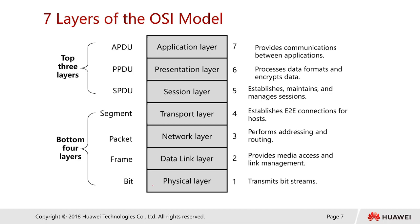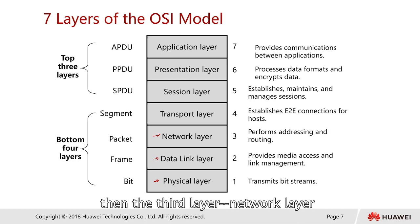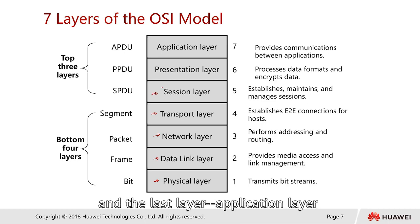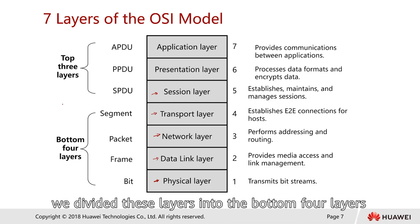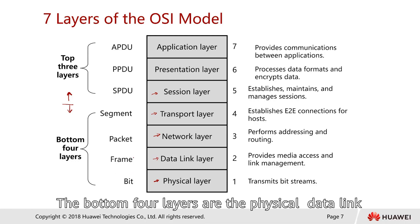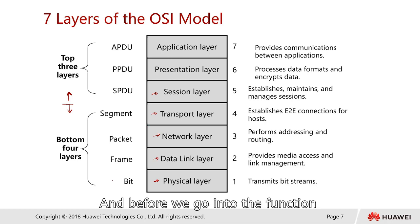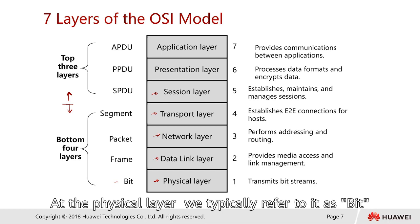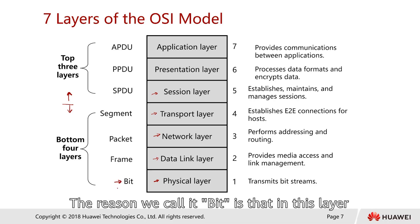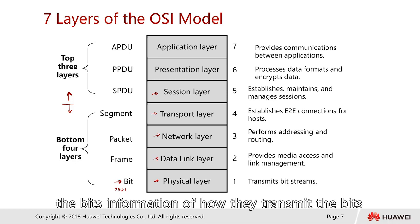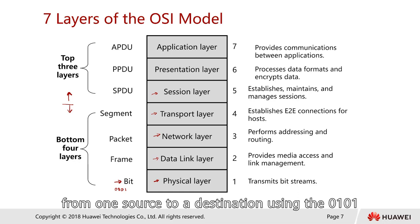Let's look at the seven layers. From the bottom we have the physical layer, followed by the data link layer, then the network layer, transport layer, session layer, presentation layer, and finally the application layer at the top. At the physical layer, we typically refer to the unit as a bit, because this layer deals with 0s and 1s — it transmits bit information from one source to a destination using binary signals.